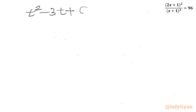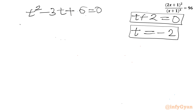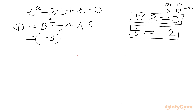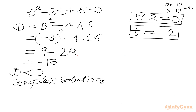From this equation we conclude either t + 2 = 0 or t² − 3t + 6 = 0. From the first, t = −2. For the quadratic, the discriminant is b² − 4ac = (−3)² − 4(1)(6) = 9 − 24 = −15. Since the discriminant is negative, this quadratic generates only complex solutions, so we reject it for real solutions.